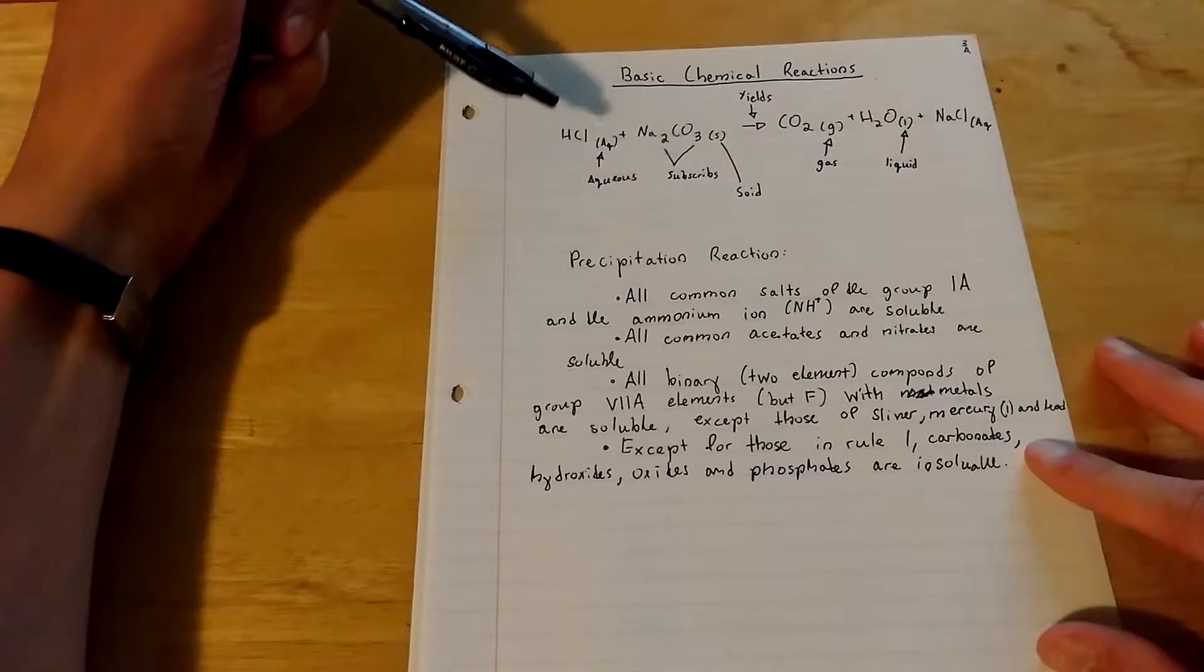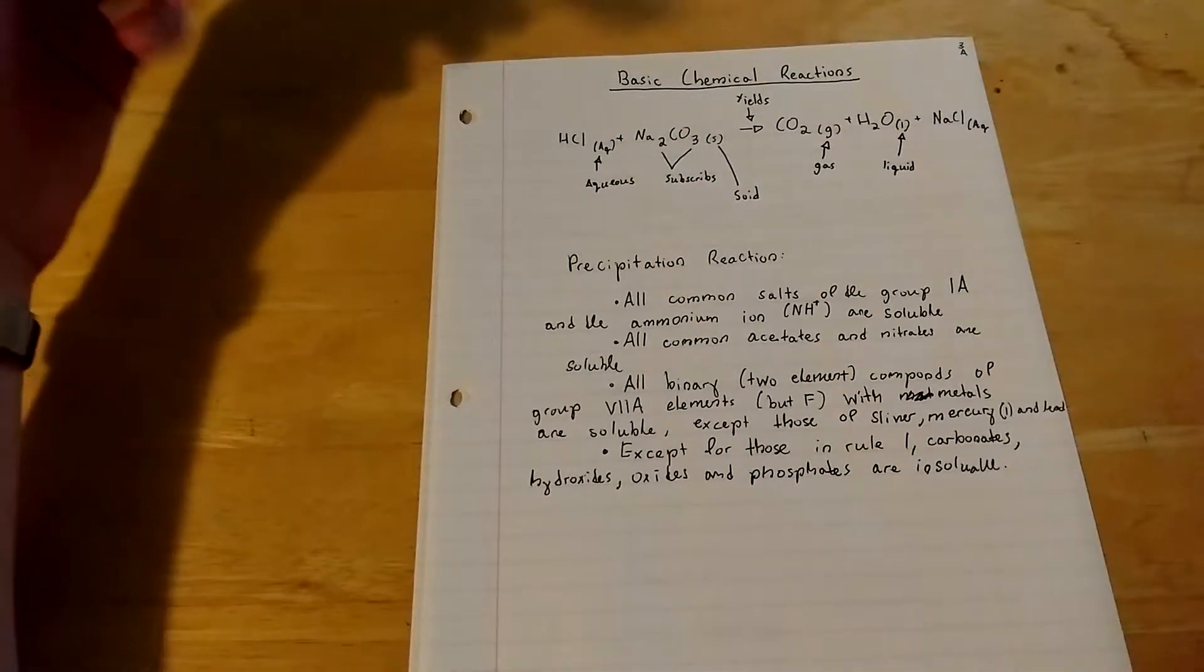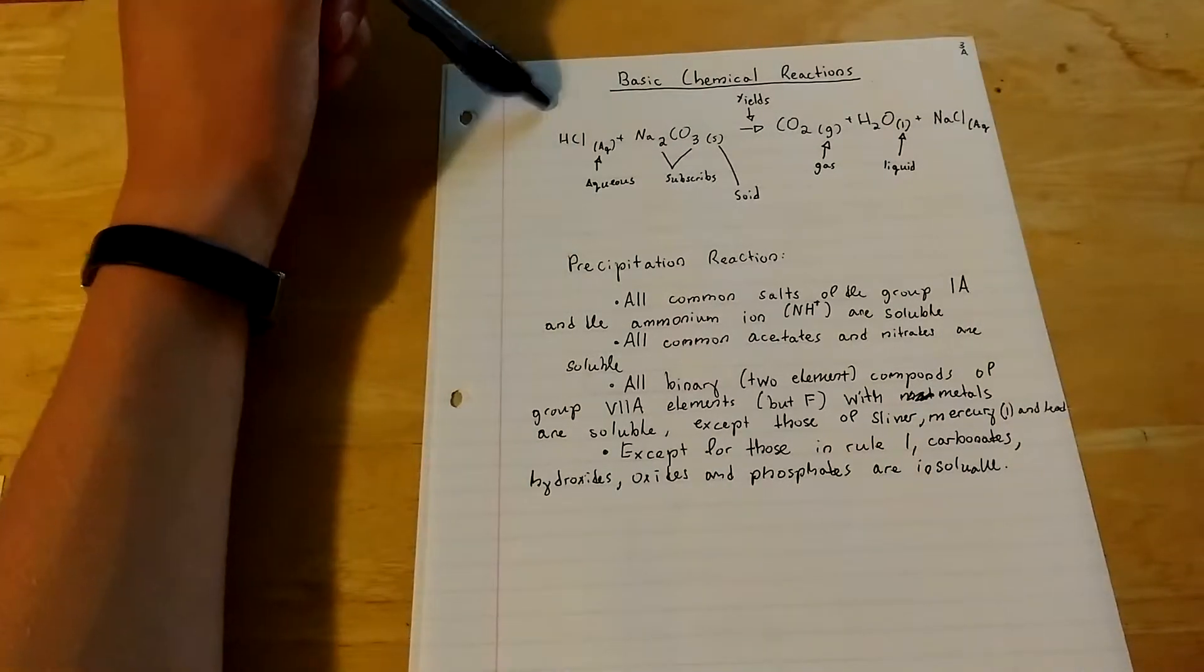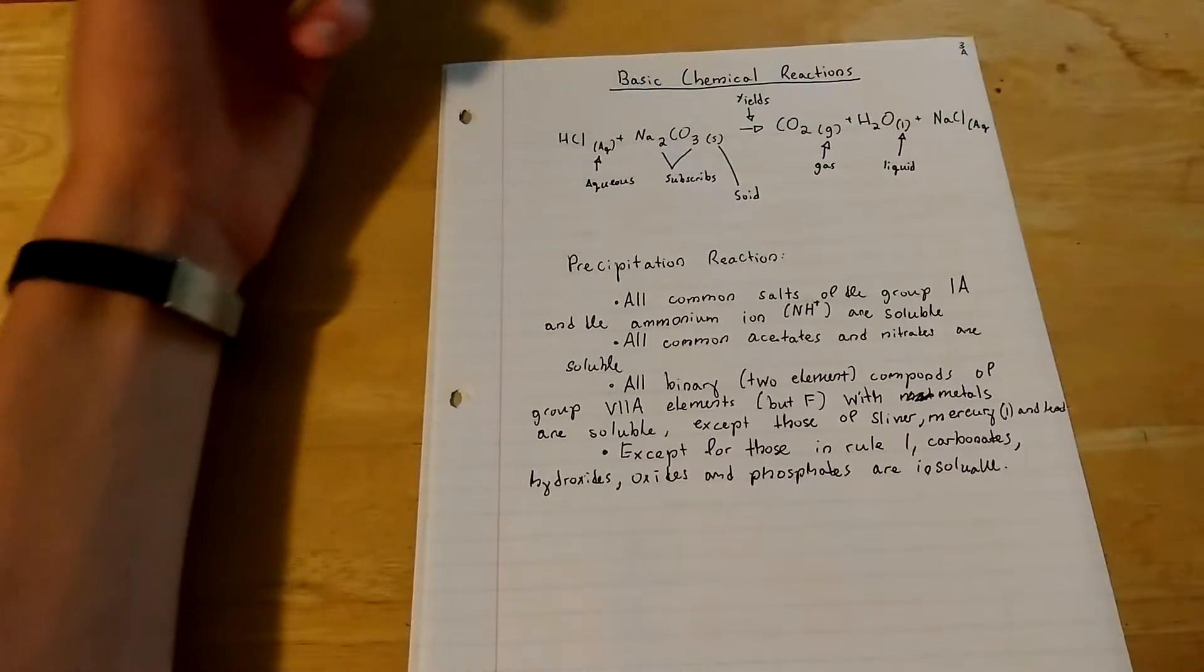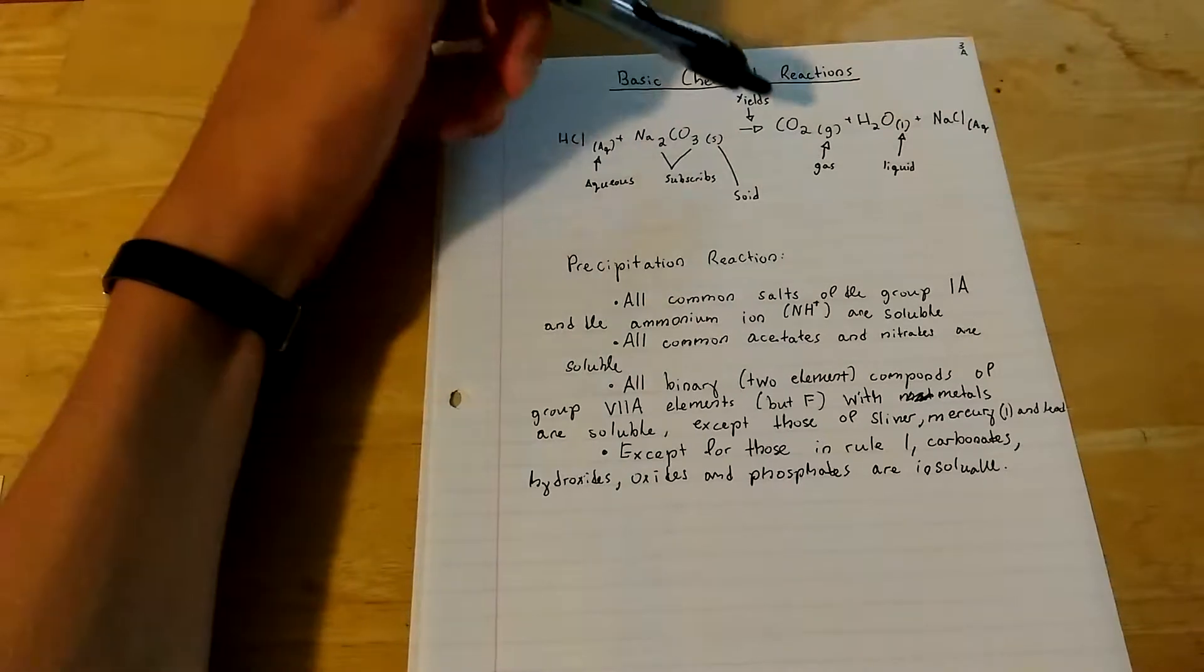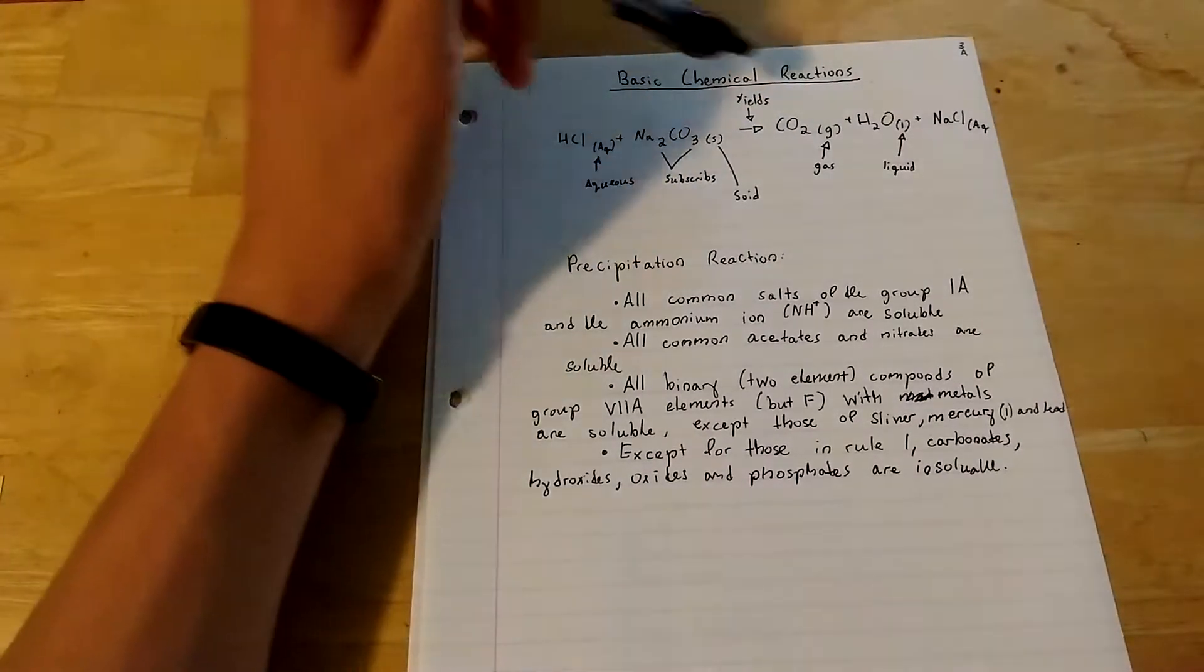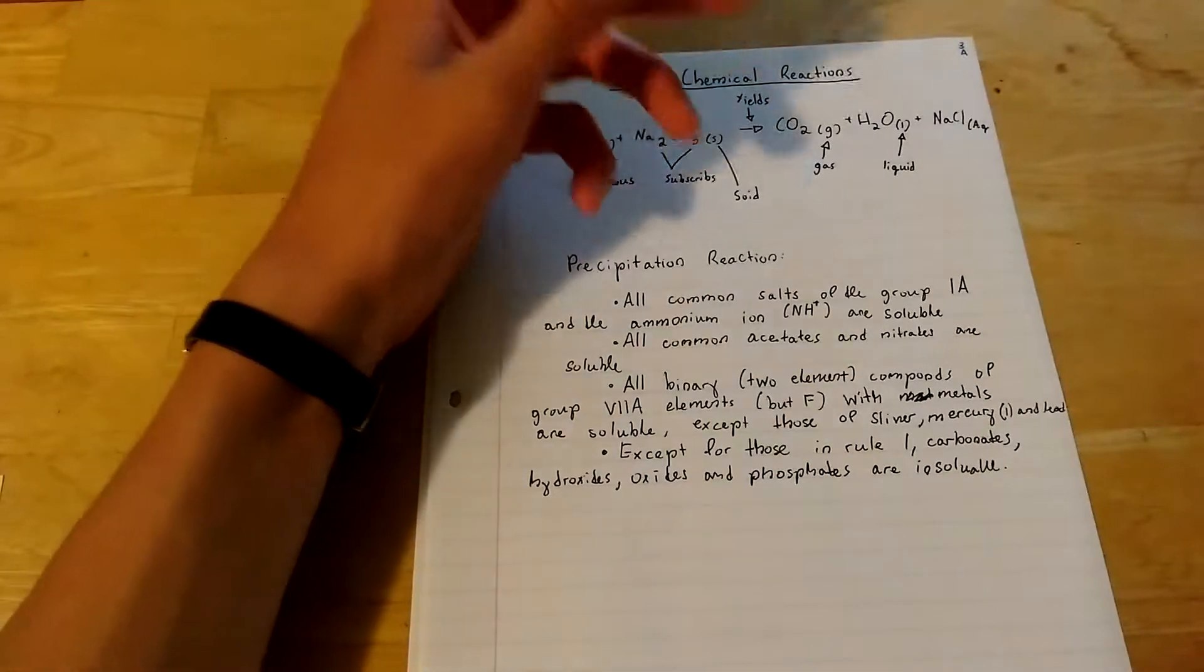So I've just got an example here where I have hydrogen chloride, also known as HCl, plus Na2CO3 or sodium carbonate. Yields - so I'll actually explain this later - yields CO2 carbon dioxide plus water plus salt.